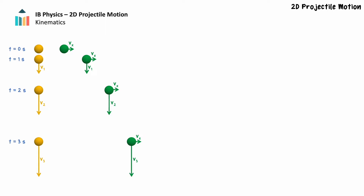The motion of a two-dimensional projectile and a one-dimensional projectile is identical in the vertical direction. If we consider a projectile that is dropped and a projectile that is thrown horizontally, we can see that the projectile's vertical velocity and displacement is identical for both projectiles at the same times. The horizontal component of the two-dimensional projectile's motion does not affect the vertical component — the vertical and horizontal motion are in fact completely independent.